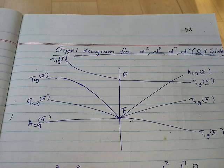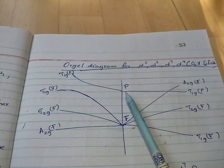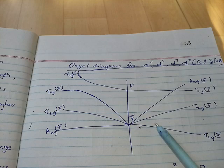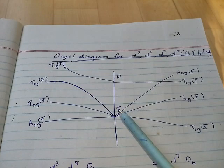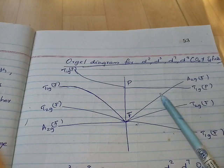We know that the F term is split up into three: T1G, T2G, and A2G, while the T1G from P means P is split into only one term. F is split up into three — T1G, T2G, A2G — and here a crossing occurs because these two terms are different, so they can interact and a crossing occurs.